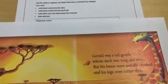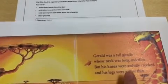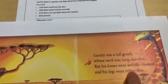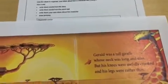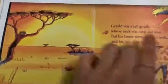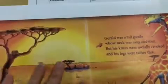But his knees were awfully crooked and his legs were rather thin. Crooked and thin are some other words to describe what the character looked like.